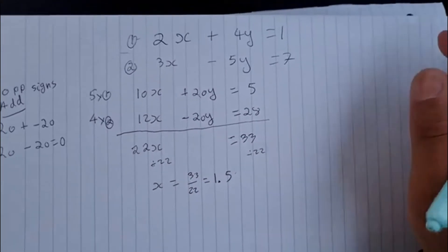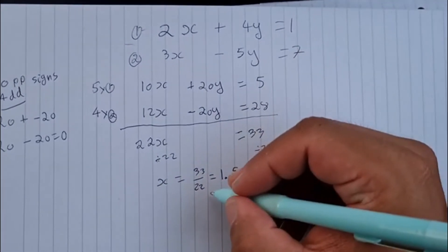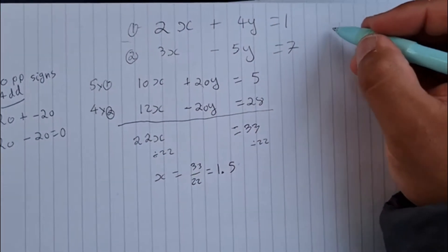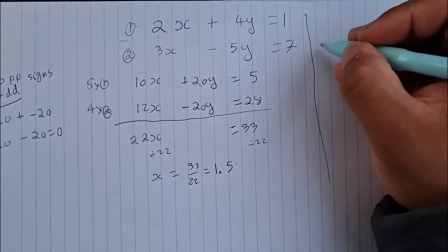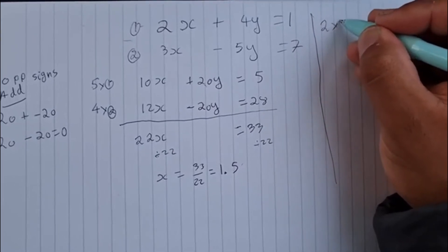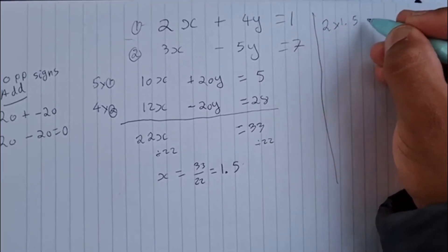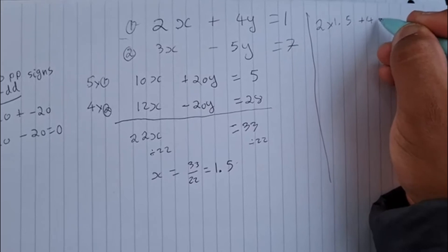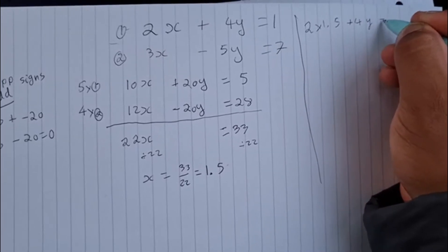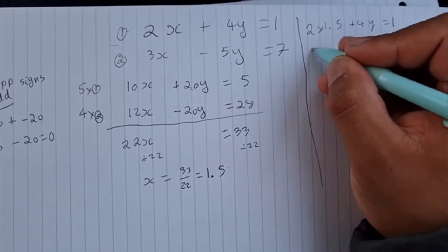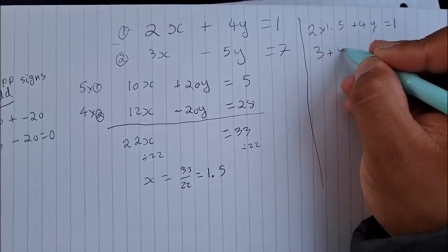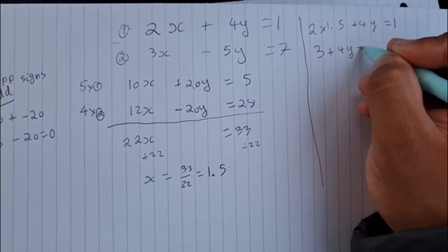And then, in order to find y, what I'm going to do is substitute x equals 1.5 back into the first equation. So I get 2 times 1.5 plus 4y is equal to 1. 2 times 1.5 is 3, so I have 3 plus 4y is equal to 1.